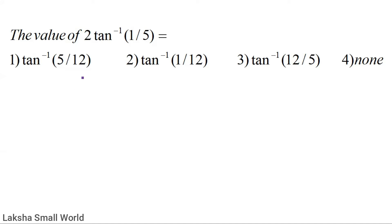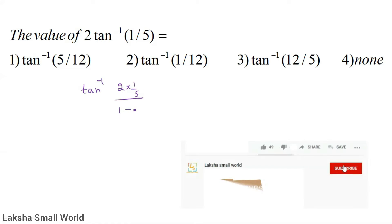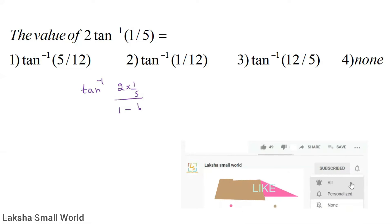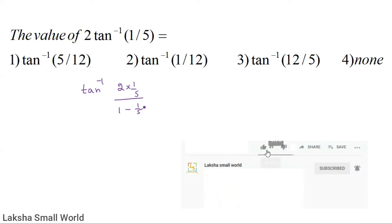Using the tan 2θ formula, convert to tan⁻¹ of 2·tan θ over 1 minus tan²θ. So that gives 2·(1/5) divided by 1 minus (1/5)², which is 1/5 × 1/5.